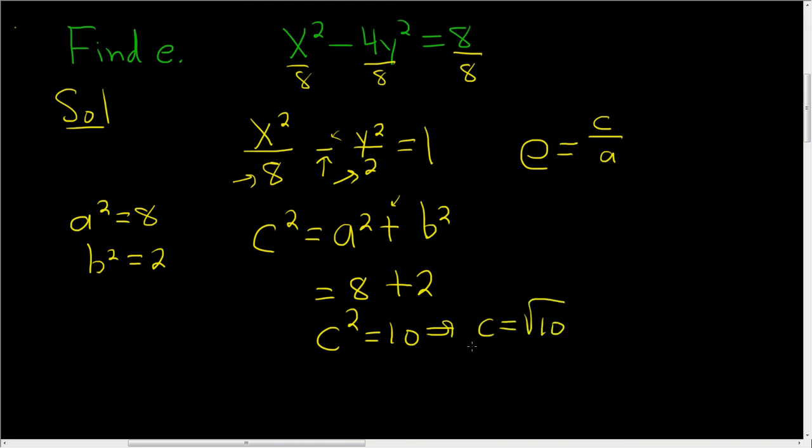We'll take the positive square root only. And to finish, we'll just use the formula. So e is the square root of 10 over, well, what's a? a is the square root of 8, right? Because a squared is 8. So a is the square root of 8.